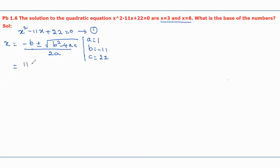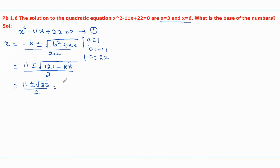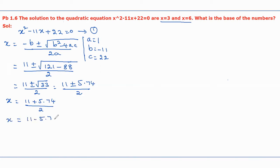Substituting, minus times minus gives plus 11, so we get 11 plus or minus square root of 121 minus 88, all divided by 2, which gives 11 plus or minus square root of 33, divided by 2, equivalent to 11 plus or minus 5.74, divided by 2. Taking the plus sign gives the first solution x equal to 8.37, and taking the minus sign gives the second solution x equal to 2.63. These are the solutions assuming the decimal number system.